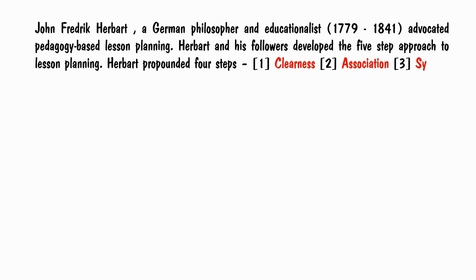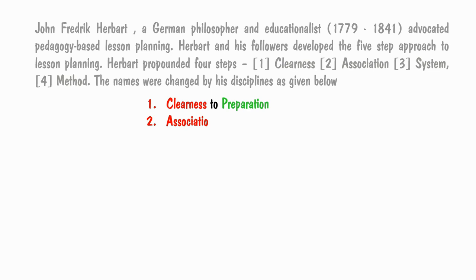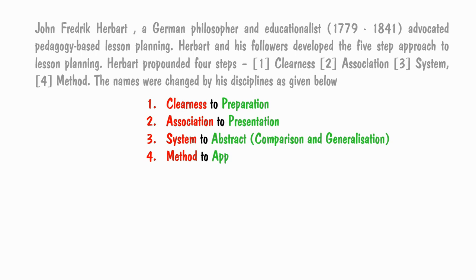Herbert originally propounded four steps: clearness, association, system, and method. The names were changed by his disciples as follows — clearness to preparation, association to presentation, system to abstract (that is, comparison and generalization), and method to application.